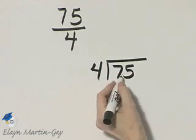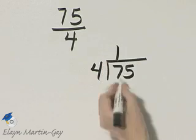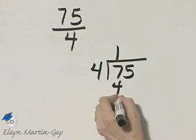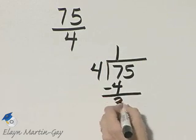How many times does 4 go into 7? That's one time. 1 times 4 is 4, and if I subtract, I have 3.